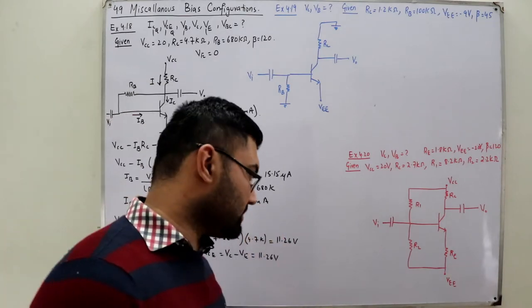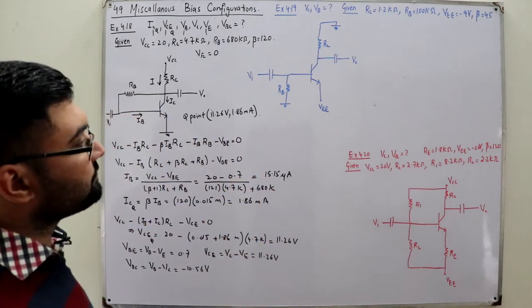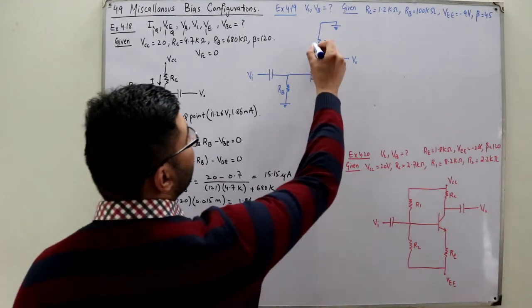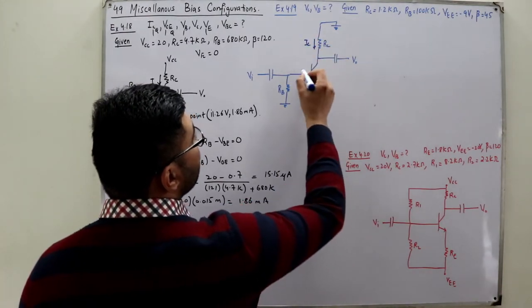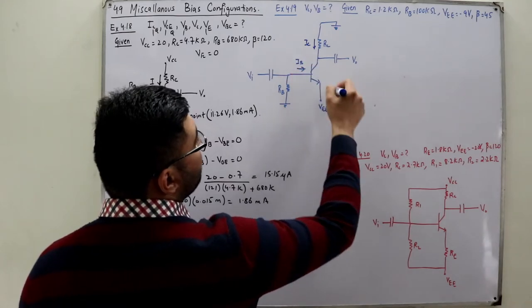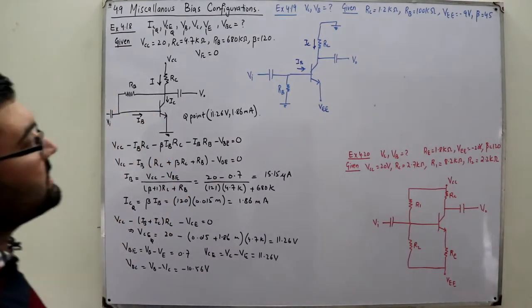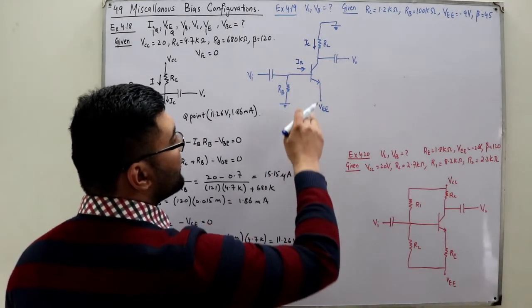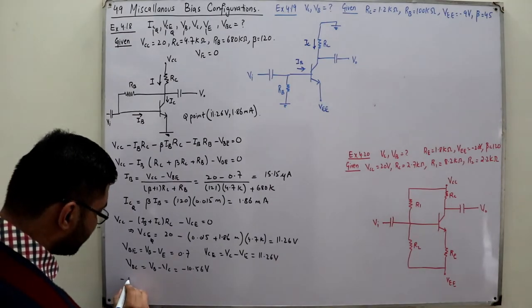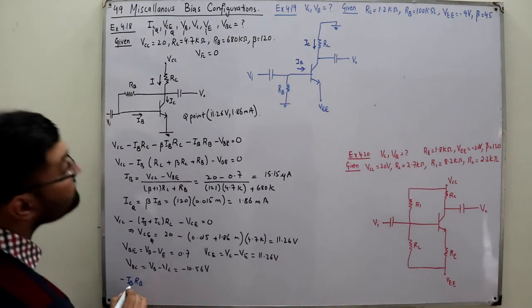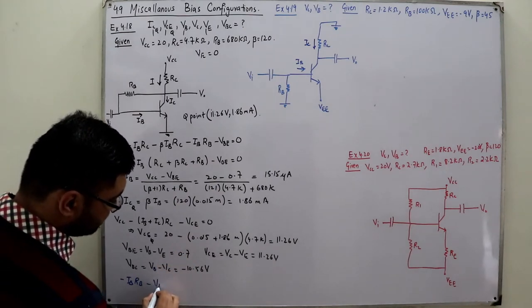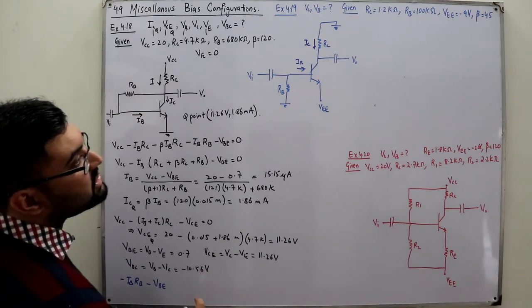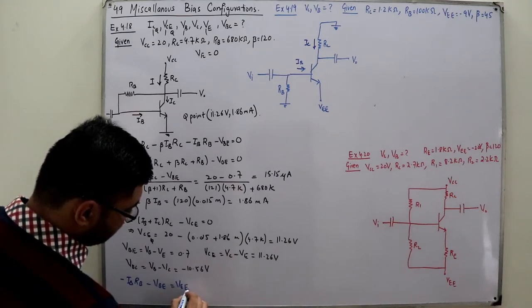Example number two is a fixed bias configuration. IC is the current flowing through the collector branch, IB through the base branch. Applying KVL to the input loop: negative IB·RB minus VBE plus VEE equals zero.